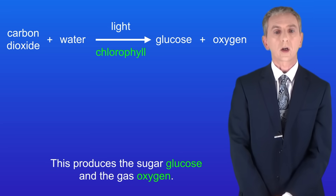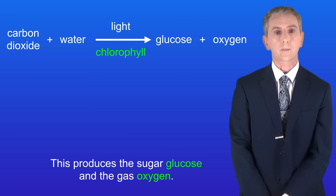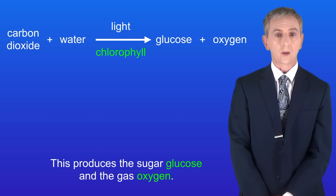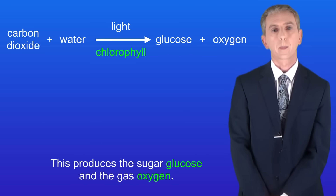This produces a sugar glucose and the gas oxygen. In this video we're looking at the uses of the glucose produced in photosynthesis, so let's get started.